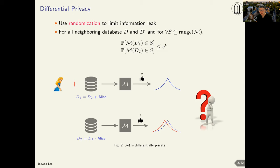Differential privacy is a mathematically rigorous notion of privacy that provides strong privacy protection against adversaries with background knowledge. Before we define differential privacy, we first need to define neighboring datasets. We say two datasets D1 and D2 are neighboring if they are exactly the same except for one individual's record. For example, as shown in the figure, one dataset with Alice and one without Alice.